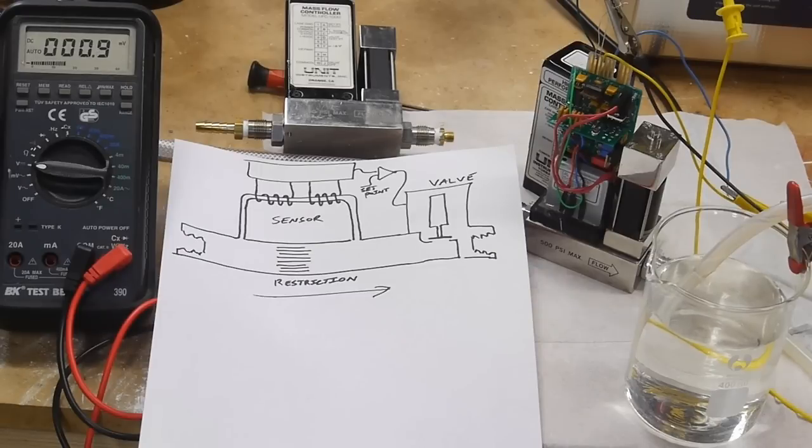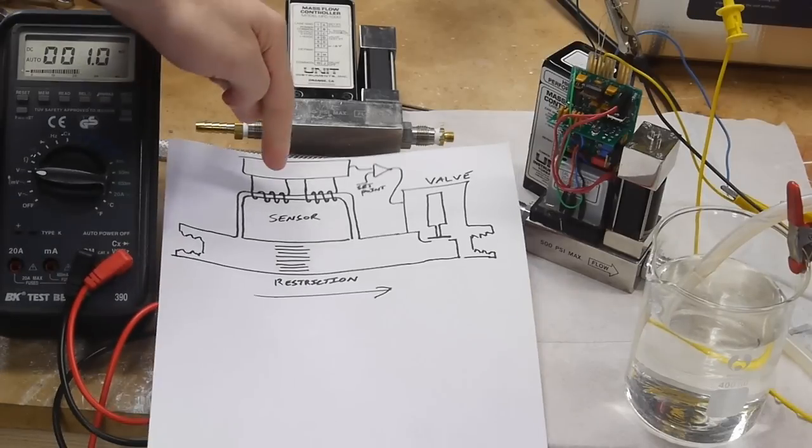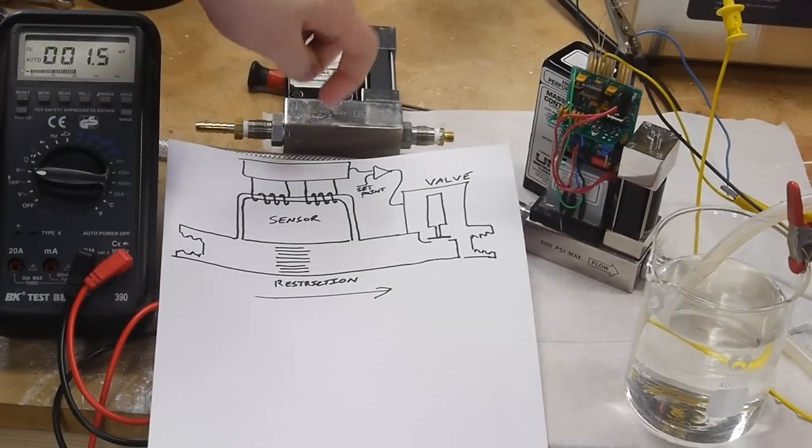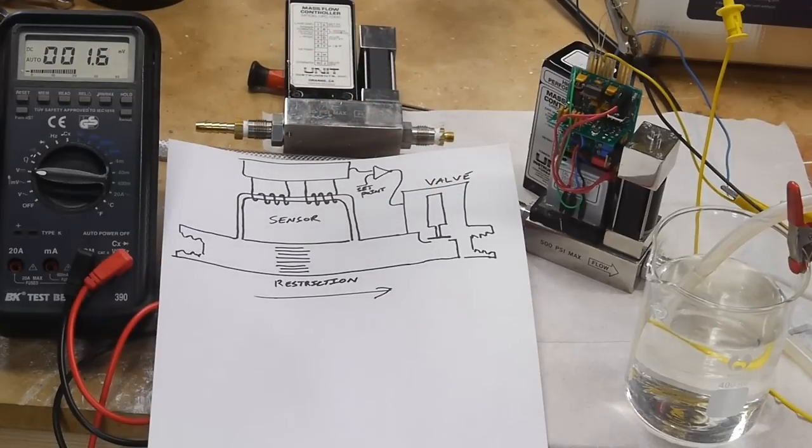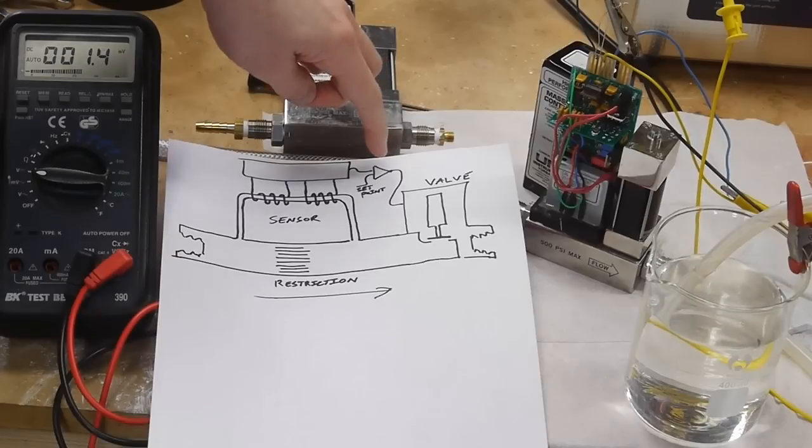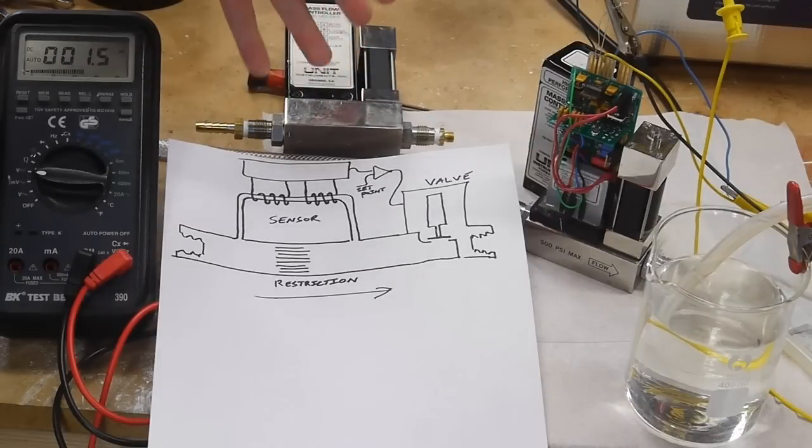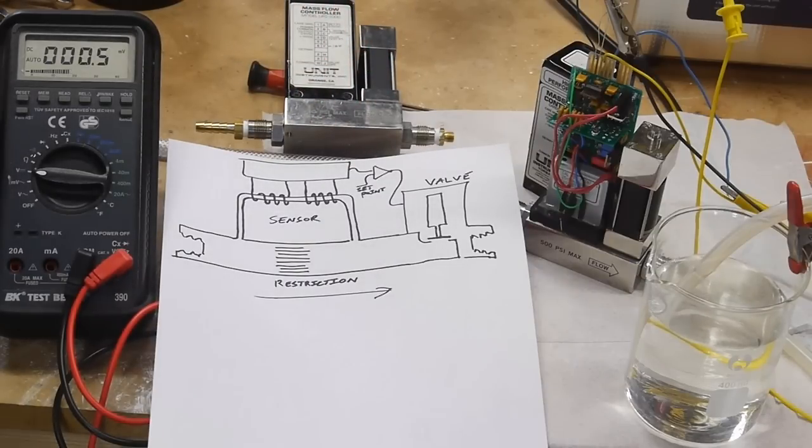The flow controller is an active device and it consists of a sensor and some analog amplification circuitry and a valve to regulate the flow of gas going through the whole thing. So the set point is determined by an external voltage and then that's fed into this analog circuitry so we basically have a closed loop servo control system.